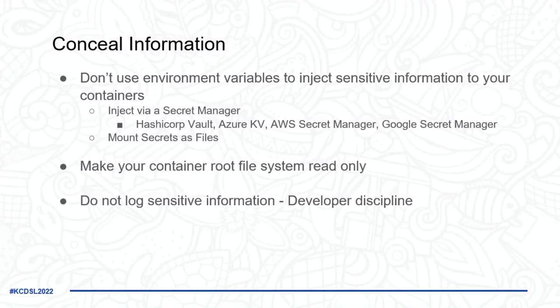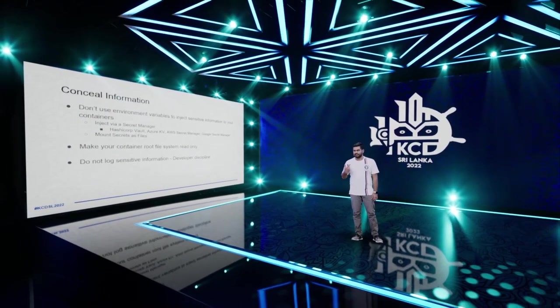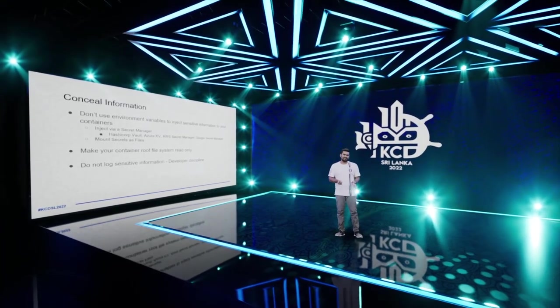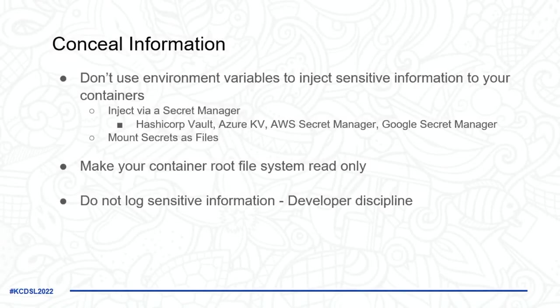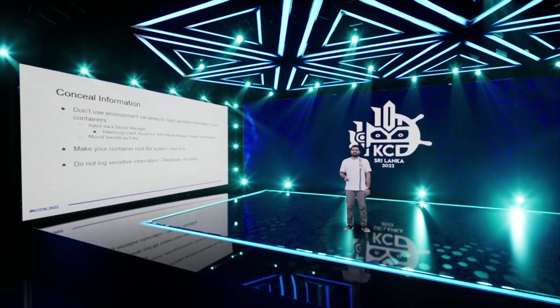To conceal sensitive information: don't inject environment variables — mount them as files instead. It's recommended to inject secrets from a secret manager at runtime rather than saving them as Kubernetes secrets, since base64 is not encryption. Use HashiCorp Vault, Azure Key Vault, AWS Secrets Manager, or Google Secret Manager to inject sensitive information as files into the container at runtime. Make your container filesystem read-only, and as developer discipline, do not log sensitive information.